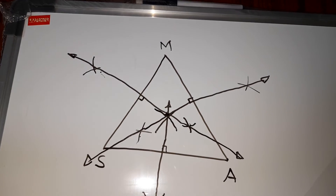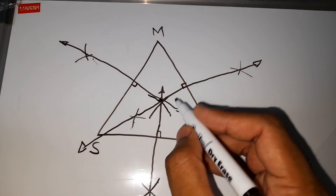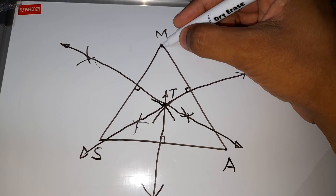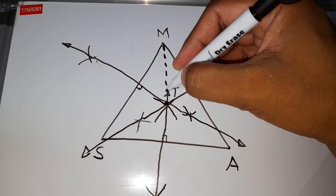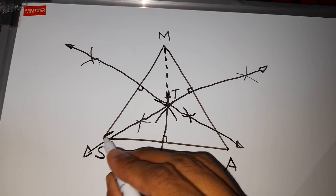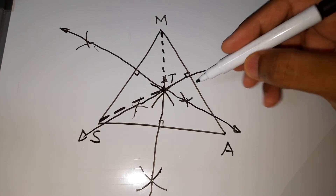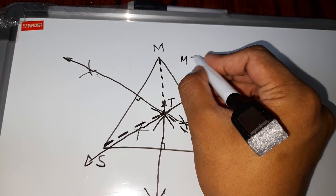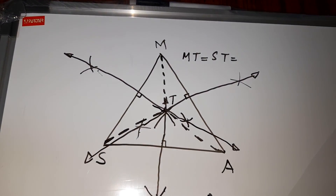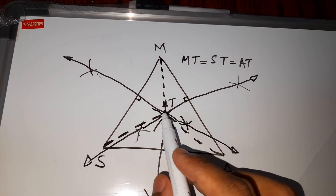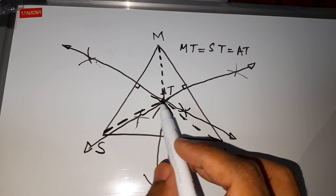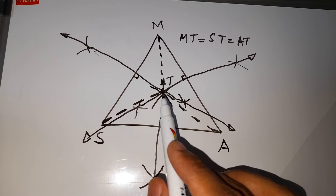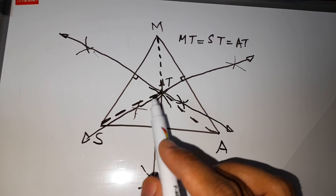We found one point where all three perpendicular bisectors meet. We will call this point T because in our problem it was the toy shop. Now if I measure MT, ST, or TA, what we will find is that MT equals ST equals AT. So we got the toy shop which is equidistant from Maitali's house, Shaila's house, and Ajay's house. This point, as we know by definition, is the circumcenter because it is equidistant from all three corners or vertices of the triangle.